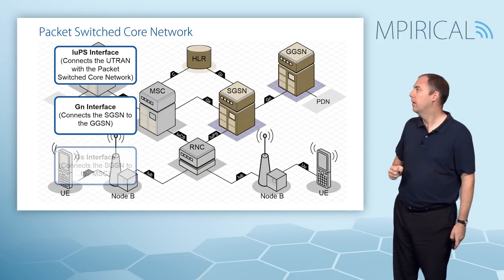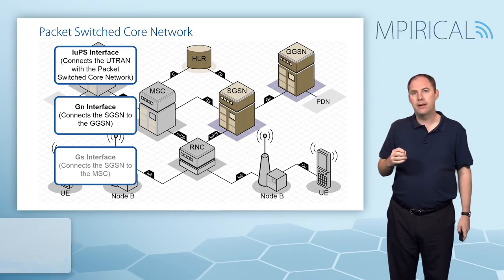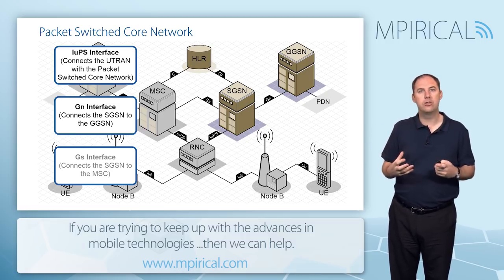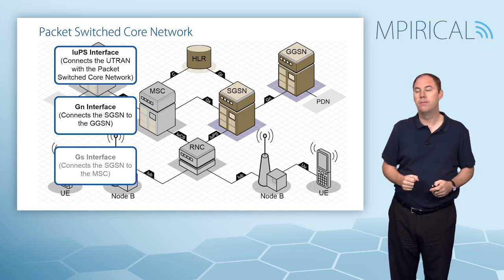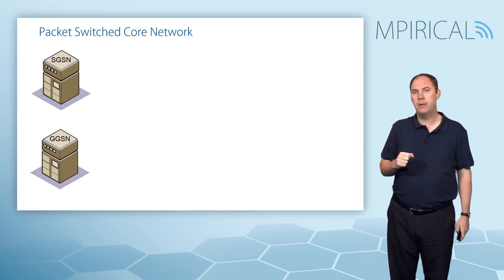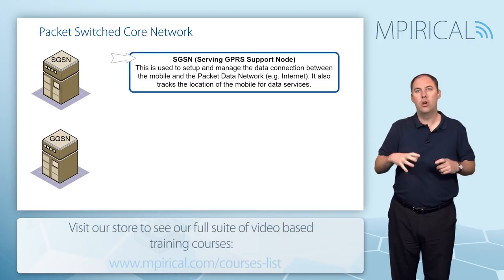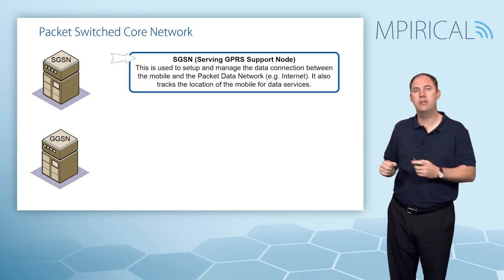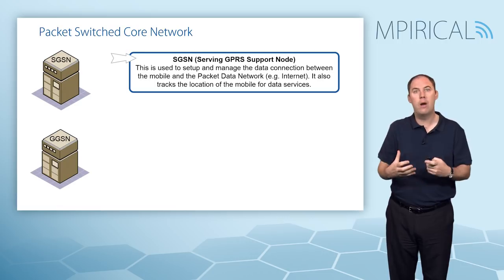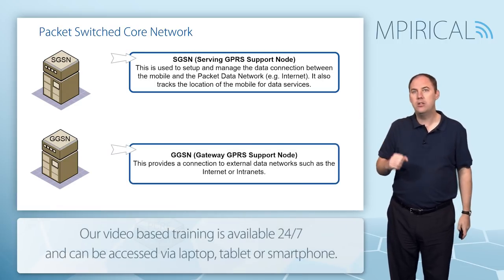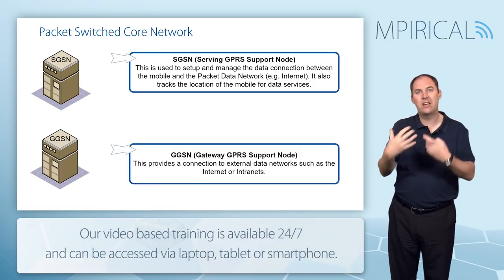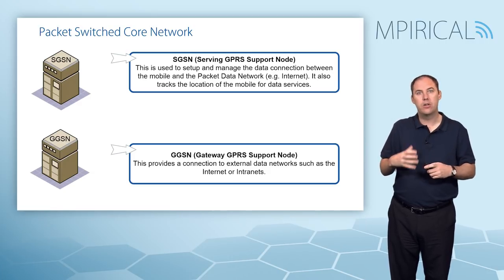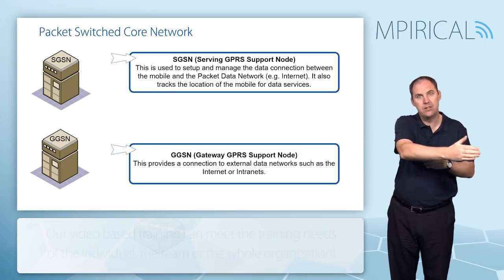There's also a Gs interface — 'S' for switch — going between the SGSN and an MSC, used for combined procedures to reduce signaling on the air interface. The SGSN is where you establish your packet switch connection; it manages subscribers and connects you to the GGSN, also keeping track of where the mobile is located. The GGSN — Gateway GPRS Support Node — handles connections to the external network, such as intranet or internet connections. It also acts as an anchor point.